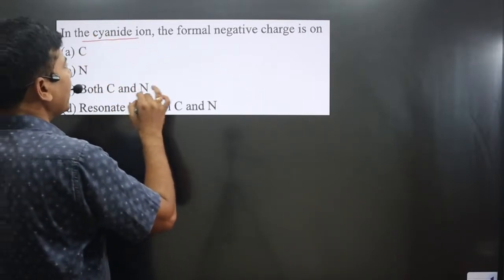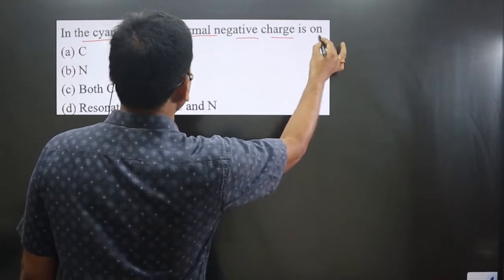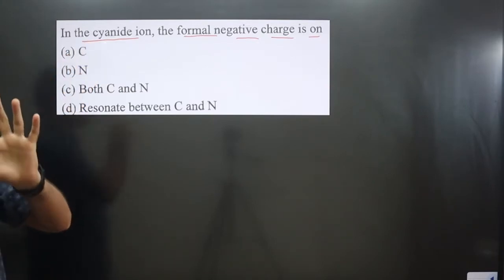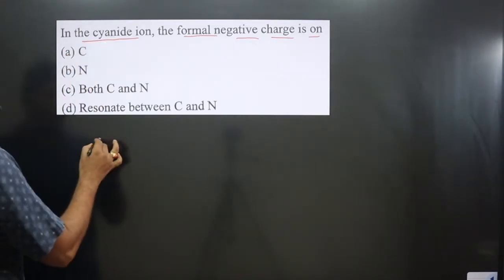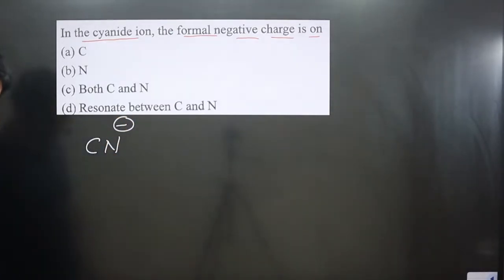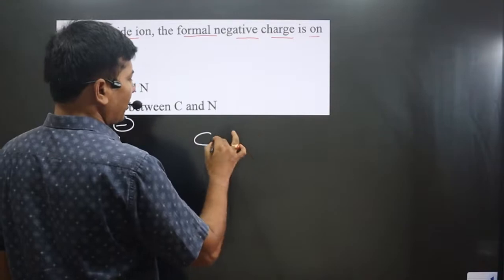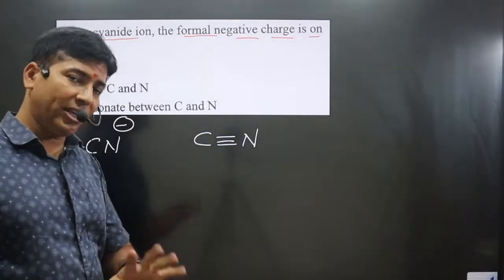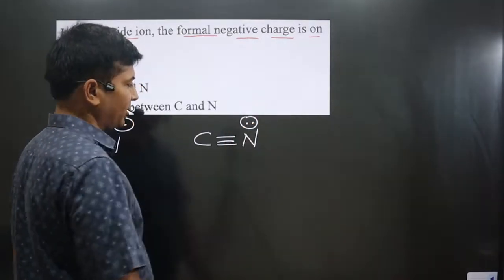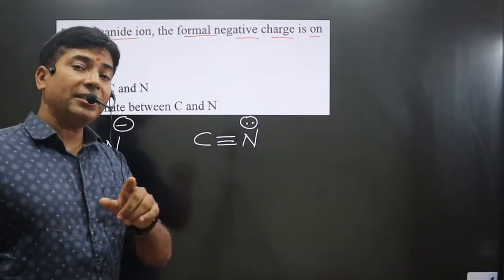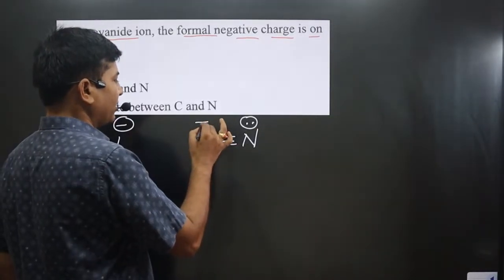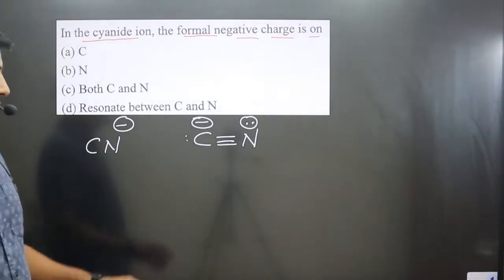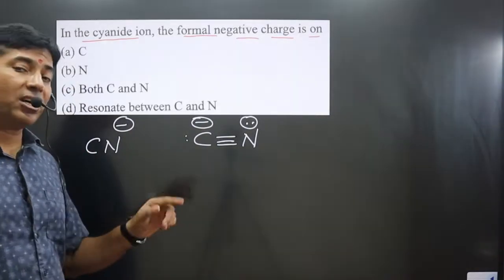The question asks: in the cyanide ion, the formal negative charge is on which atom? To determine this, we draw the structure of the cyanide ion. We have carbon triple bonded to nitrogen. Nitrogen is forming three bonds, its valency is satisfied, and it has one lone pair. Carbon is forming fewer than three bonds, so it carries one negative charge. Its octet is not complete.